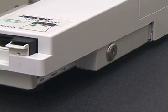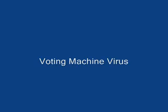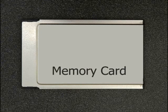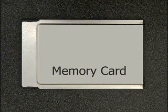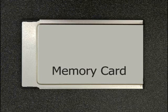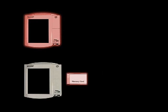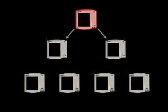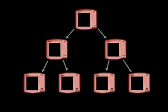Due to design flaws in the Diebold AccuVote TS voting machine, it is possible to construct a computer virus that infects these machines and spreads automatically from one machine to many others. To illustrate this, we have constructed a demonstration virus in our lab. The machines use removable memory cards to distribute software updates and store the results of elections — the memory cards function similarly to floppy disks or thumb drives on ordinary PCs. Memory cards act as carriers for the virus. When a memory card is inserted into an infected machine, the machine copies the virus onto that memory card. If the memory card is removed and later put into another machine, the virus spreads from the memory card to the new machine. In this way, the virus can spread from one infected machine to an entire population of machines.